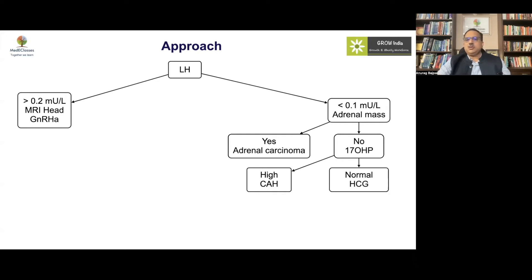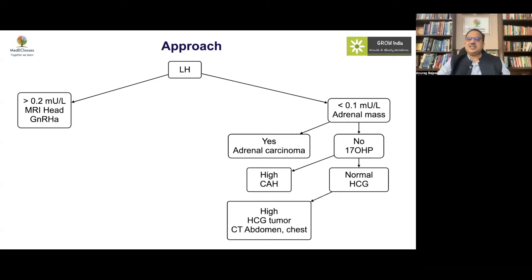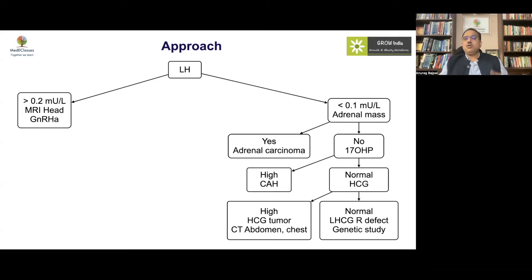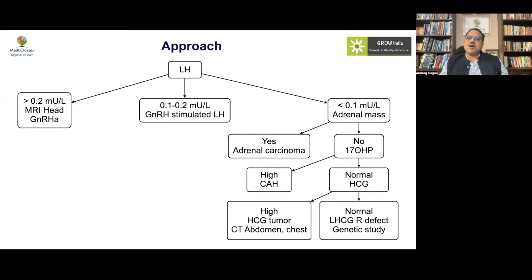If 17-hydroxyprogesterone levels are normal, we should exclude an HCG-producing tumor. If the HCG level is high, this suggests an HCG tumor requiring careful evaluation of the abdomen, chest, and CNS. If the boy has normal 17-OHP, normal abdominal imaging, and normal HCG, the next step is genetic study for an LHCG receptor defect — testotoxicosis. To summarize: all boys with central precocious puberty require MRI; those with peripheral form need workup for adrenal lesions, HCG-producing tumors, and then testotoxicosis.